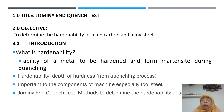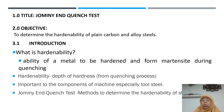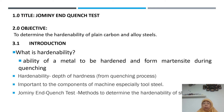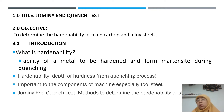We need to measure hardenability because the quenching or heat treatment process used in daily life varies when we change the parameters, and martensite can be formed during the quenching process. Hardenability refers to the depth of hardness that we can measure from the quenching process. This is important especially for tool steel components because we can harden the material. Hardness can be measured using a Vickers hardness machine, but hardenability is measured using the Jomini End Quench Test.